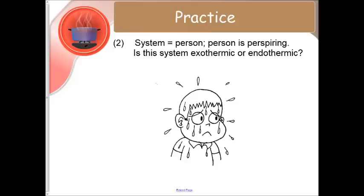Another example, we have a person that is sweating profusely. If he is the system, is he exothermic or endothermic? In this case, he is exothermic. He is releasing heat causing the perspiration to absorb that heat and then it evaporates away from him to cool him down.